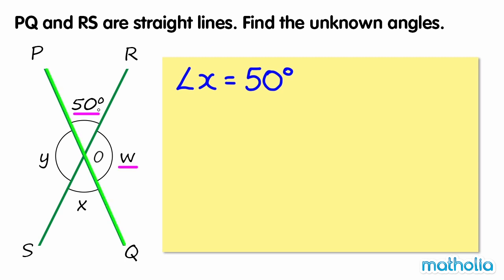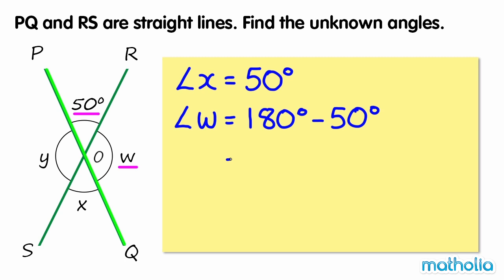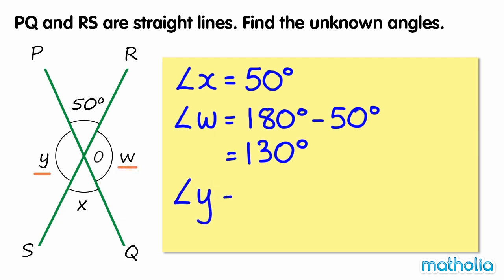Recall that the sum of angles on a straight line is 180 degrees. So angle W is equal to 180 degrees minus 50 degrees, which equals 130 degrees. Angle Y is vertically opposite to angle W, so angle Y equals angle W, which equals 130 degrees.